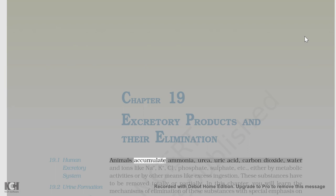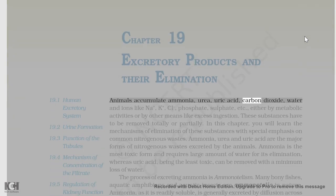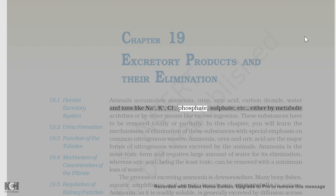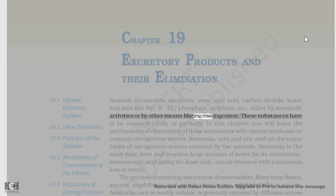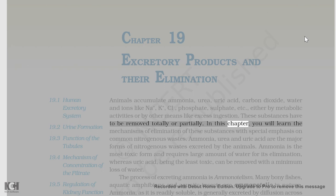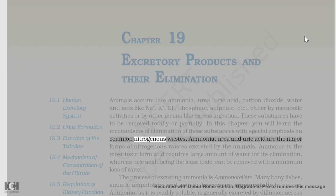In biology, animals accumulate ammonia, urea, uric acid, carbon dioxide, water, and ions like Na+, K+, Cl-, phosphate, sulfate, etc., either by metabolic activities or by other means like excess ingestion. These substances have to be removed totally or partially. In this chapter, you will learn the mechanisms of elimination of these substances with special emphasis on common nitrogenous wastes.